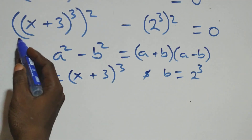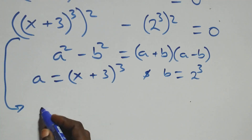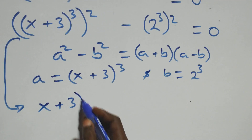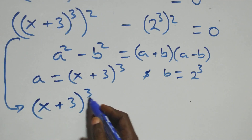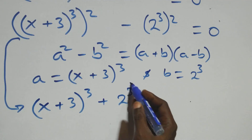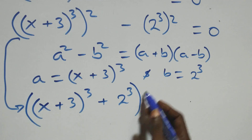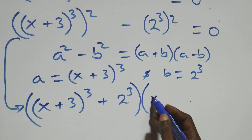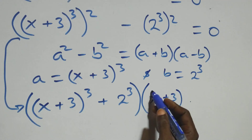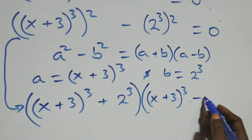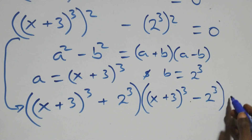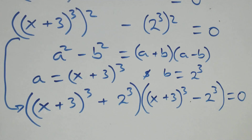Then what we have here, following this, it becomes: x plus 3, all raised to the power 3, plus 2 raised to the power 3, into brackets — and also open bracket — x plus 3, all raised to the power 3, minus 2 raised to the power 3, in brackets, equals to 0 here.